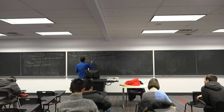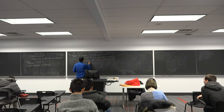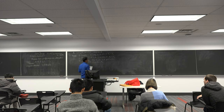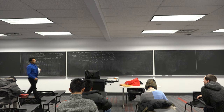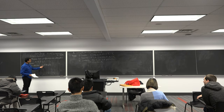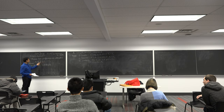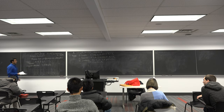The third axiom is continuity: if A1 ≺ A2 ≺ A3, then there exists a probability P between 0 and 1 such that P·A1 + (1−P)·A3 ~ A2. That is, there exists a probability P such that I am indifferent between eating a banana and a lottery that gives me a cookie with probability P and an apple with probability 1−P.